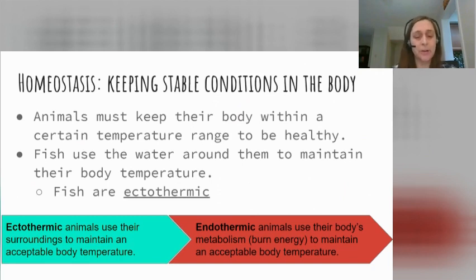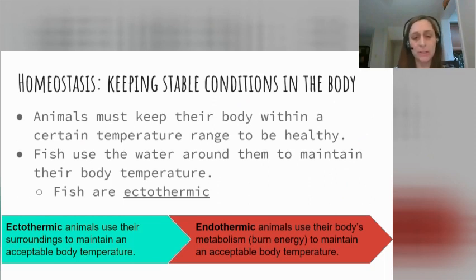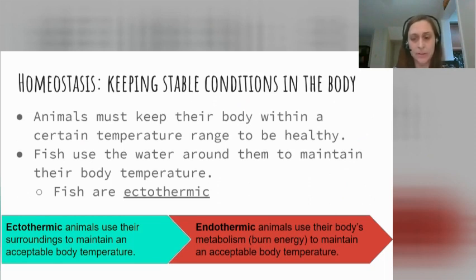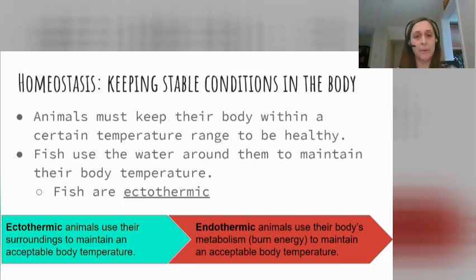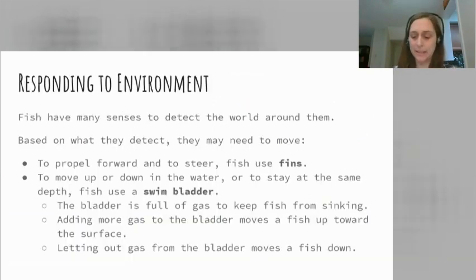Fish are mostly ectothermic — almost all fish are ectothermic. They use their surroundings to maintain an acceptable body temperature. Fish that can handle colder body temperatures may live deeper in the ocean where it's colder, but a lot of fish will be in the warm, sunny, protected surface waters to maintain their body temperature.